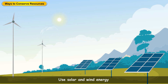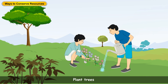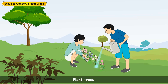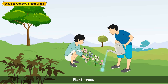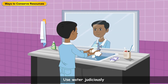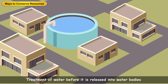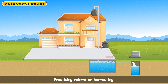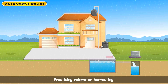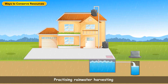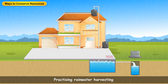Use alternative sources of power such as solar and wind energy. Plant trees to prevent soil erosion. Practice judicious use of water at home. Treatment of industrial wastes before they are released into the water bodies. Rainwater harvesting and growing vegetation in catchment areas.